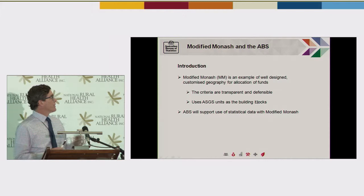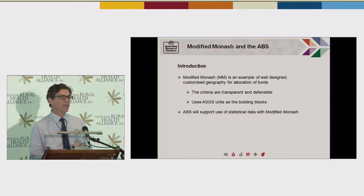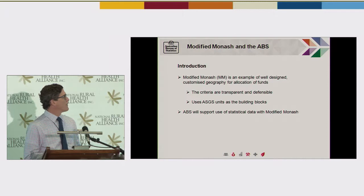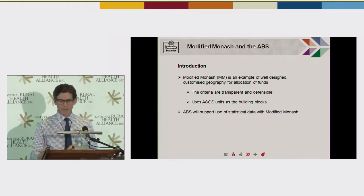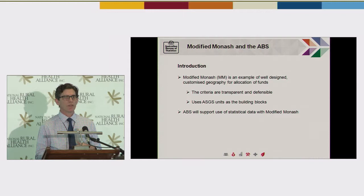From our perspective, we think the Monash Model is a really good example of a well-designed geography. For starters, it's a customised allocation of ASGS units, which is really good because it enables a variety of people to put data together for the Monash Model. The criteria that are used are defensible and transparent, which is really important. All of our geographies try to use those types of principles, and from our perspective we will see what we can do to support the Monash Model through the types of resources we provide geographically within the ABS.